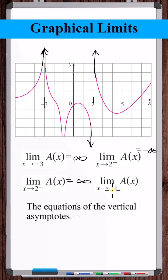As x approaches negative 1 — here's negative 1 — coming from the left, a of x is approaching negative infinity. Coming from the right, a of x is also approaching negative infinity.